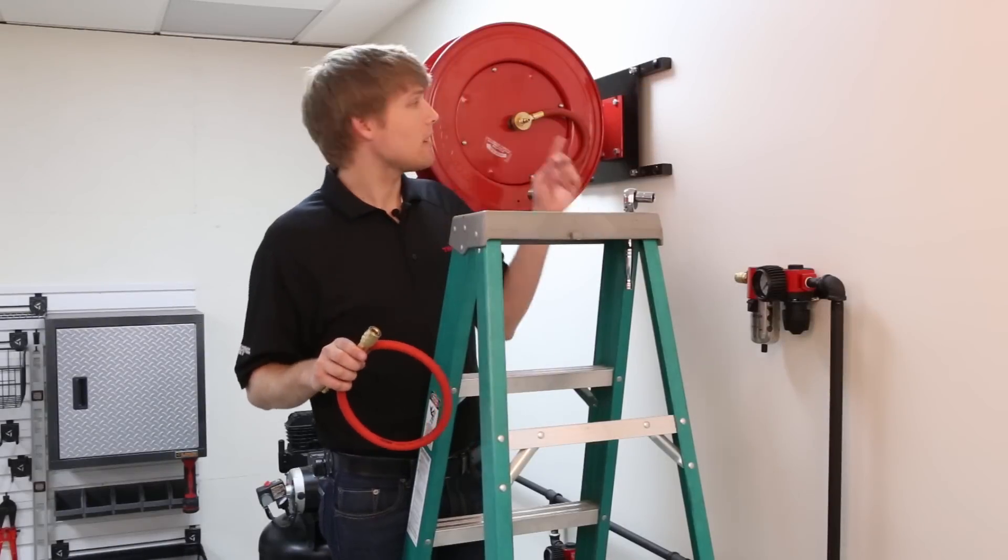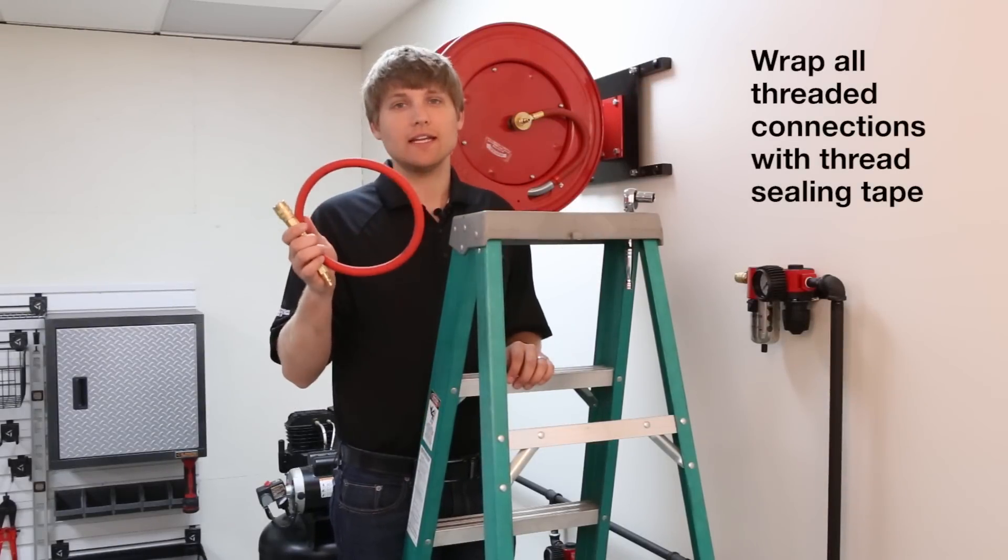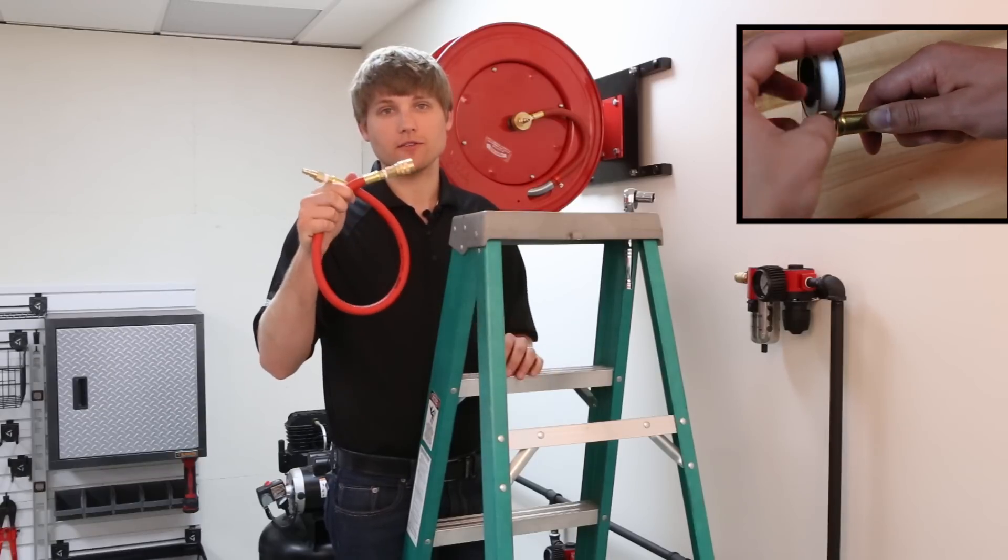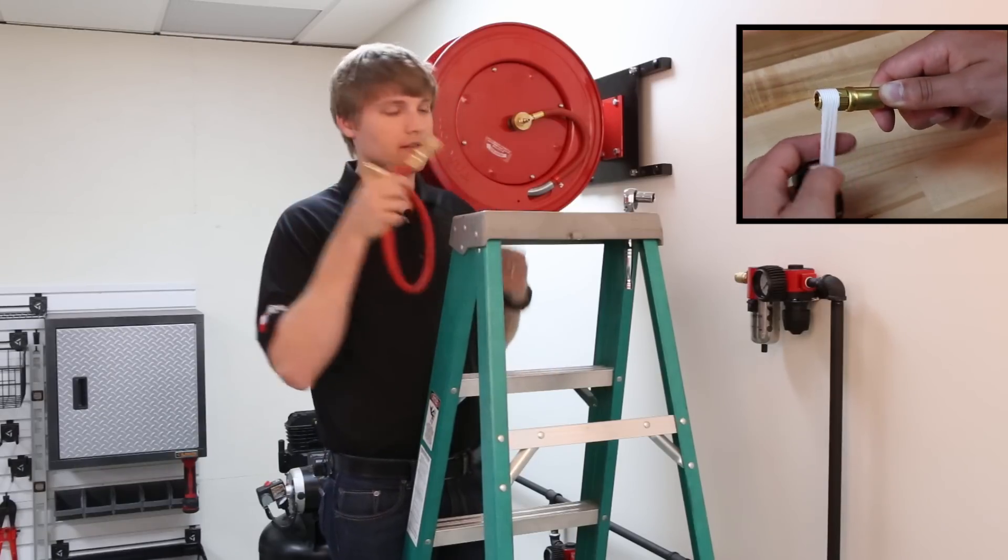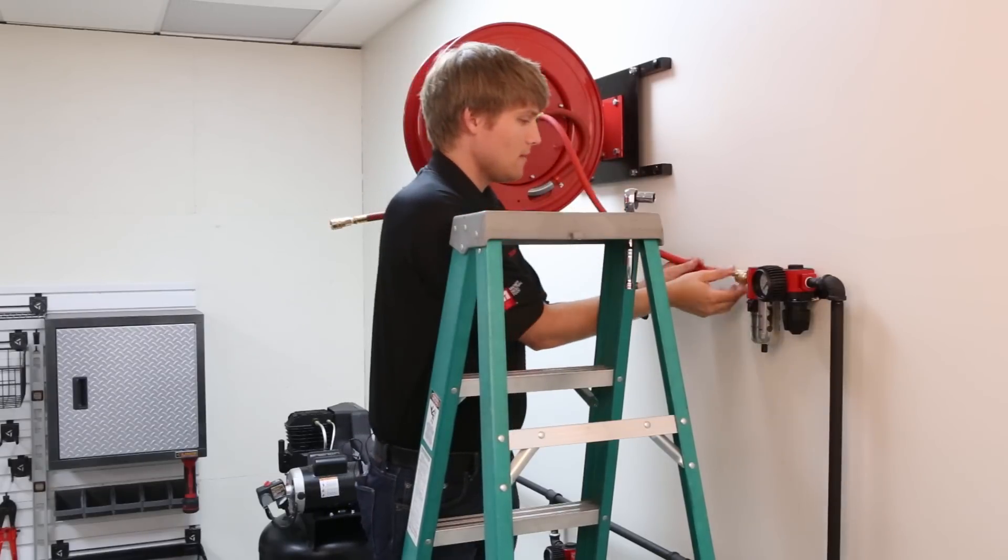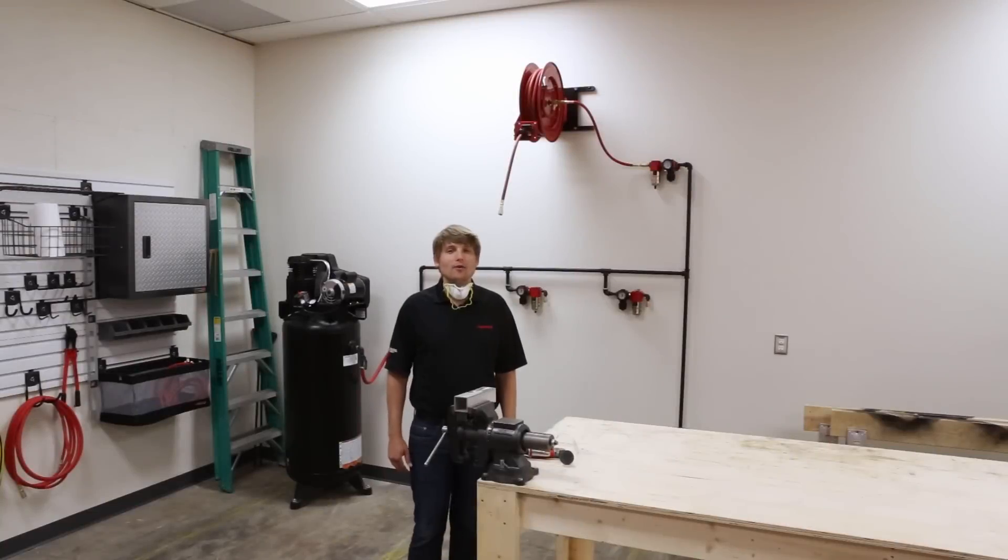The last step is to connect your air hose reel to your supply line using a lead-in air hose. We're using quick-release connectors for this installation, and now you're ready to use your new Tekton air hose reel.